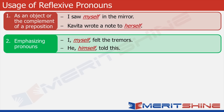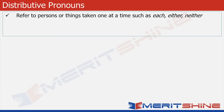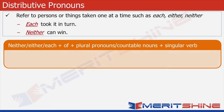Now let's move to distributive pronouns. Distributive pronouns such as each, either, neither refer to persons or things taken one at a time. Each took it in turn. Neither can win. Distributive pronouns — neither, either, each — are used along with 'of' before plural pronouns and countable nouns and take singular verbs.